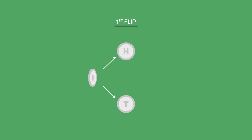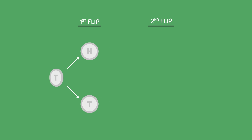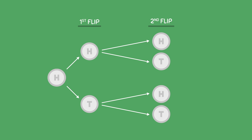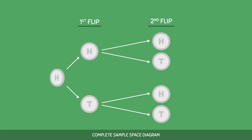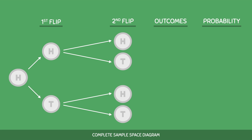We can also draw out the sample space for flipping the coin twice. For the first flip, we can get either heads or tails. Then from each of these possible outcomes, we would perform a second flip, in which the coin can again land on heads or tails. This is the complete sample space diagram. From this diagram, we can determine the possible outcomes and the probability for each outcome. We can find the possible outcomes by following each arrow. For example, one outcome could be getting heads on the first flip and then getting tails on the second flip. We can therefore write this outcome as HT.